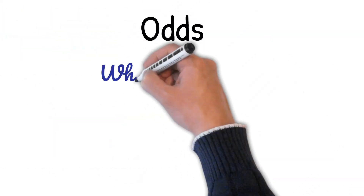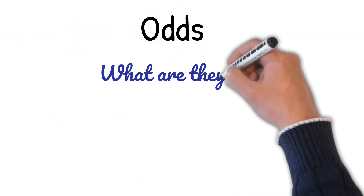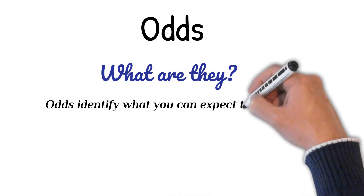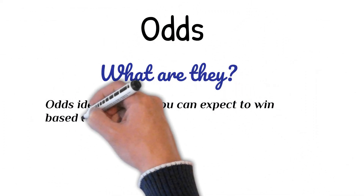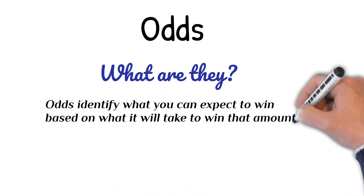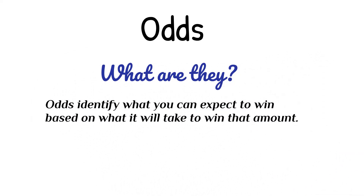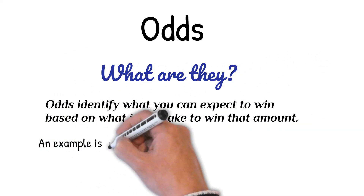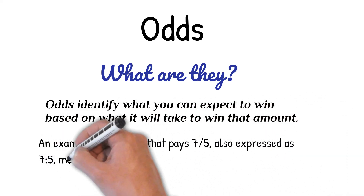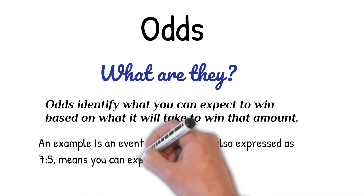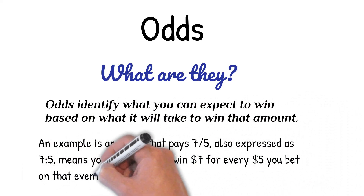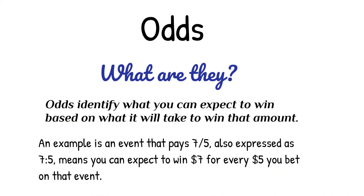Odds — what are they? Odds identify what you can expect to win based on what it will take to win that amount. An example is an event that pays 7 to 5, also expressed as a ratio 7 to 5, meaning you can expect to win $7 for every $5 you bet on that event.